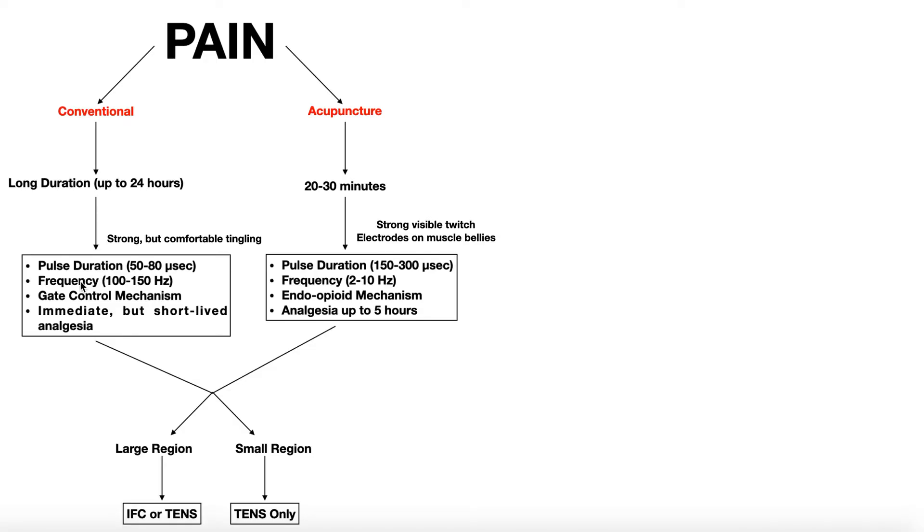The frequency for conventional setting should be between 100 and 150 hertz. For frequency, it's the opposite. Normally, the higher the frequency, the more comfortable it is for the patient. If I was just starting out with this, I would probably set it to 150 hertz, but a pulse duration around 50 to 60 microseconds for a conventional setting.